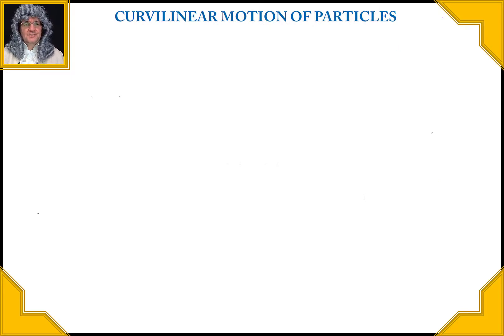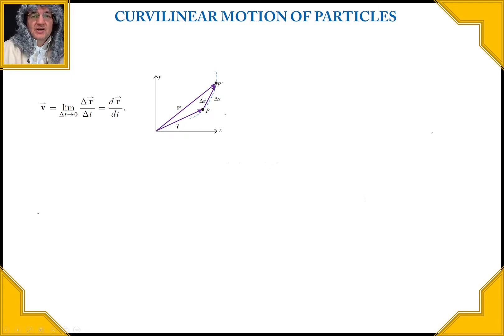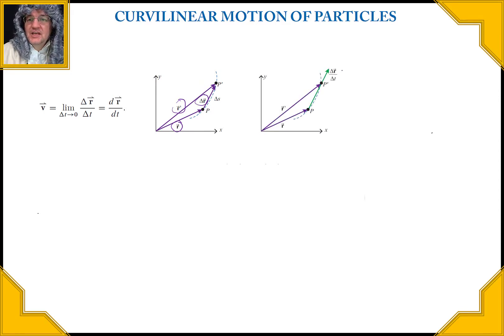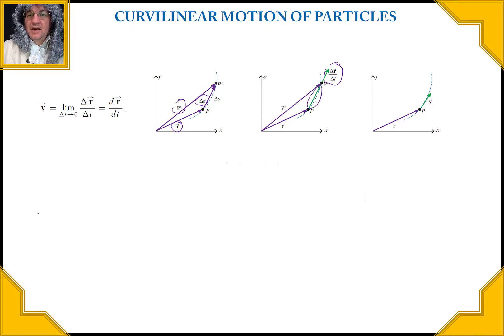For curvilinear motion of particles, we know we can take the limit as the increment of time gets smaller and smaller. We have a position vector r and a position vector at a different time r′, and so there's a Δr between those two. As Δt gets smaller and smaller, the velocity becomes tangent to the path — that is such an important thing. Velocity is always tangent to the path.